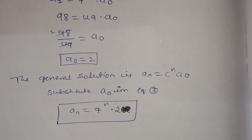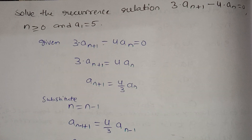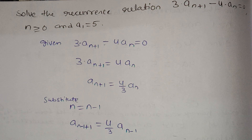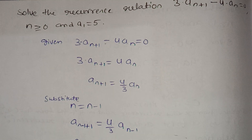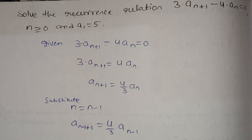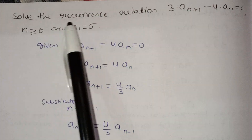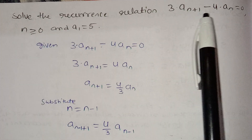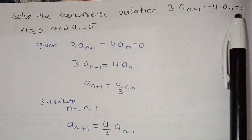Now we have another problem. Solve the recurrence relation: 3·aₙ₊₁ minus 4·aₙ equals 0.